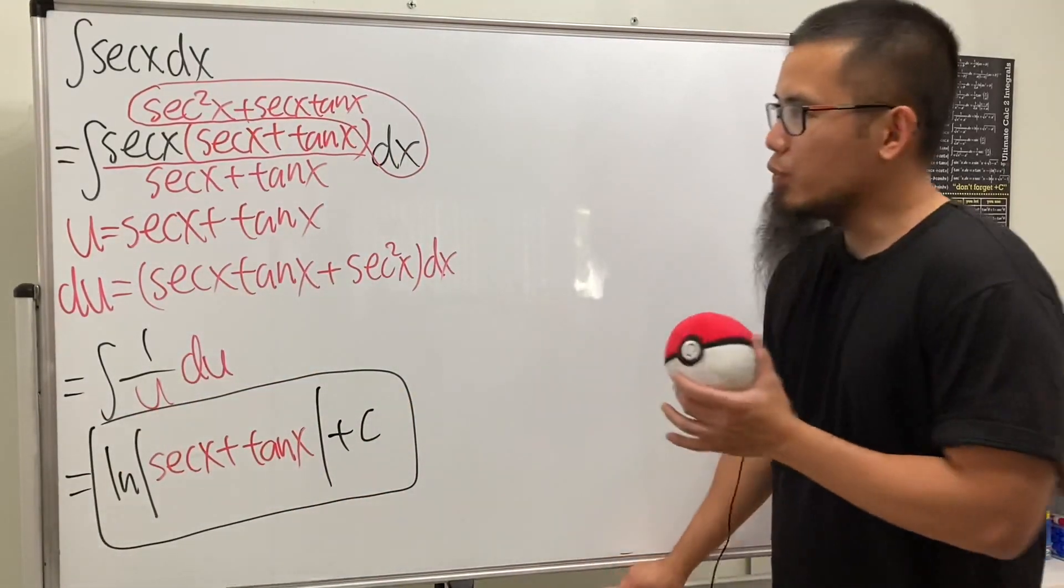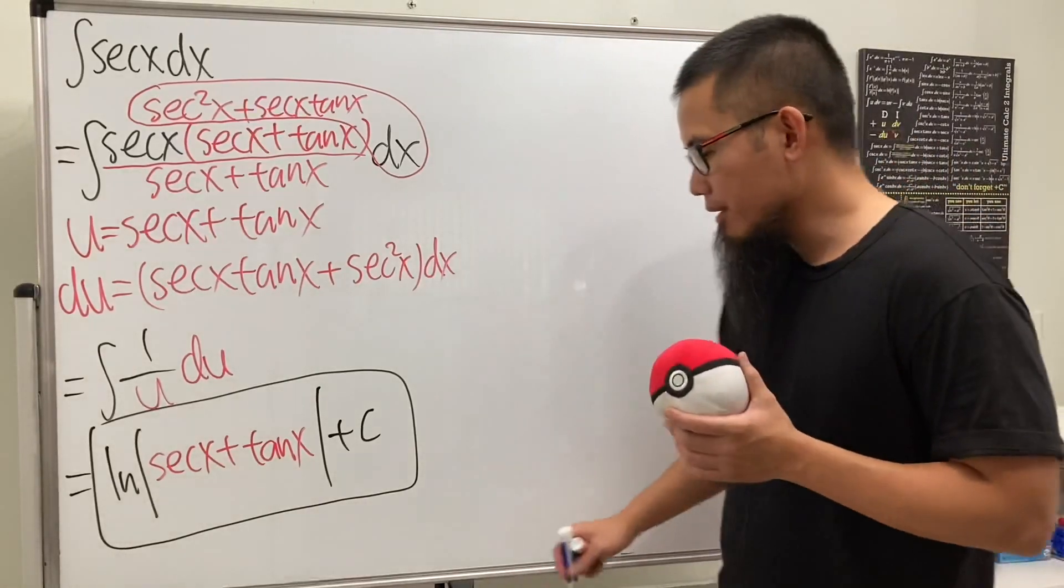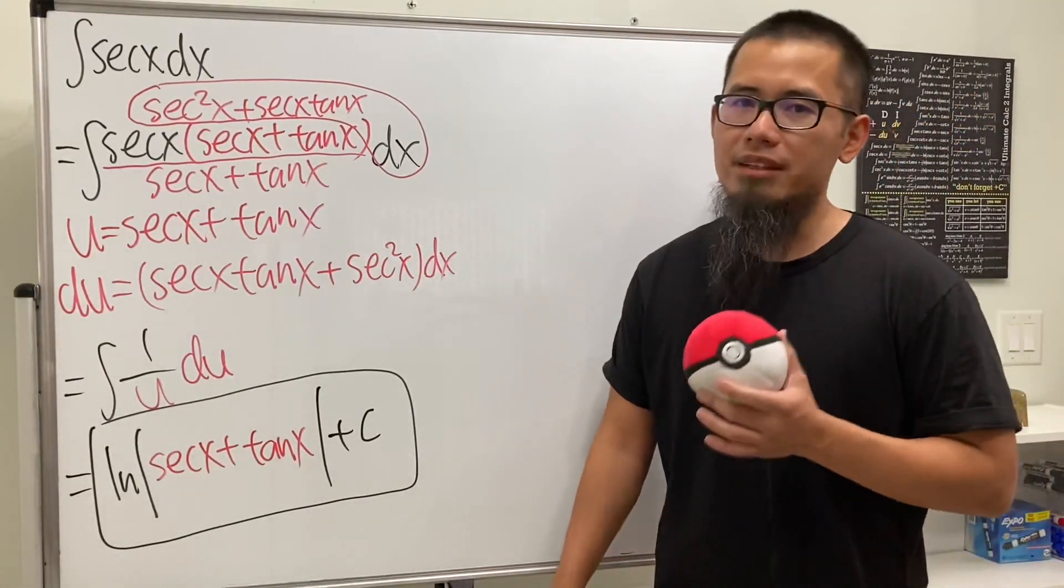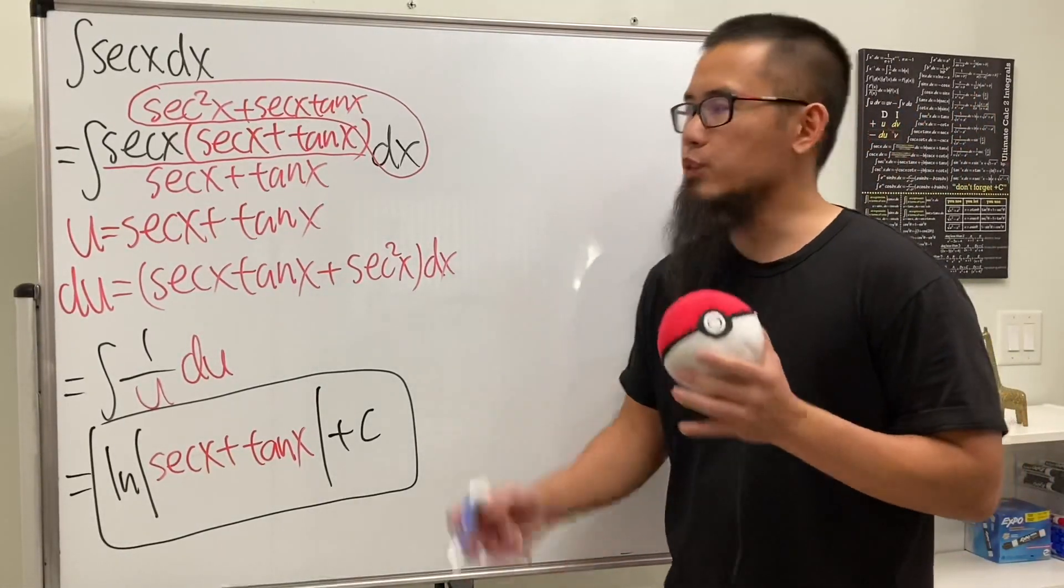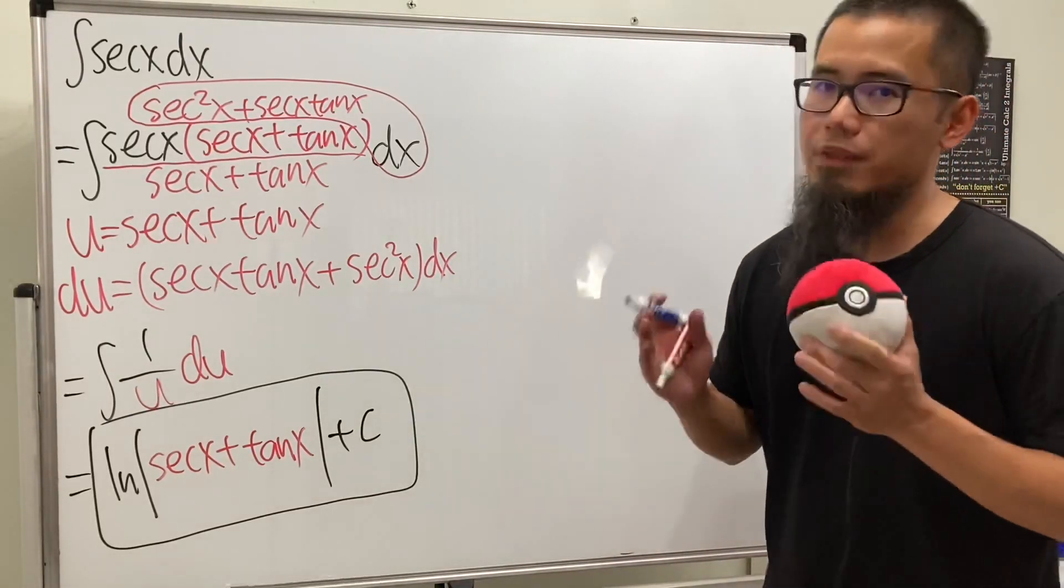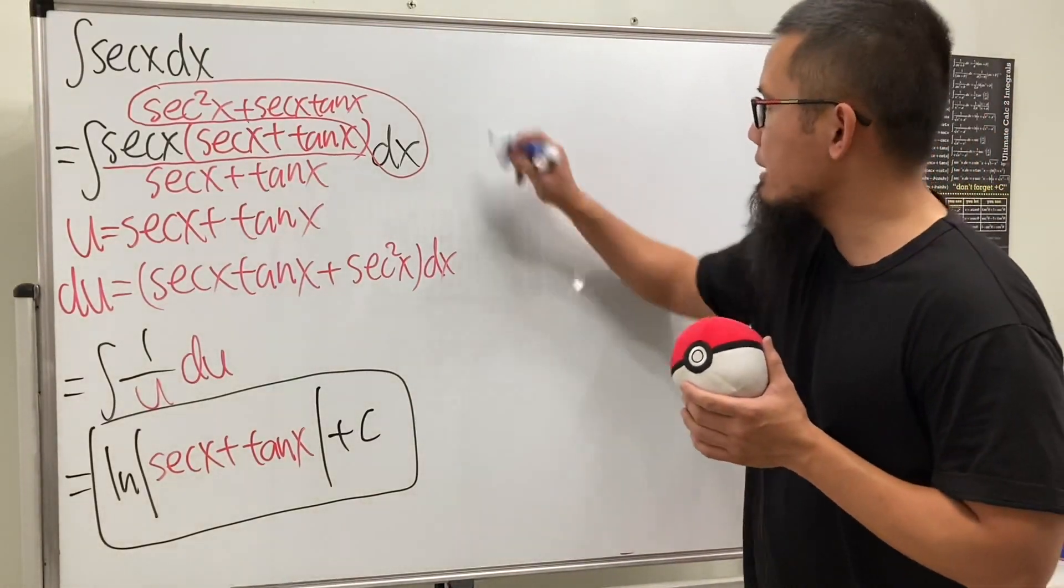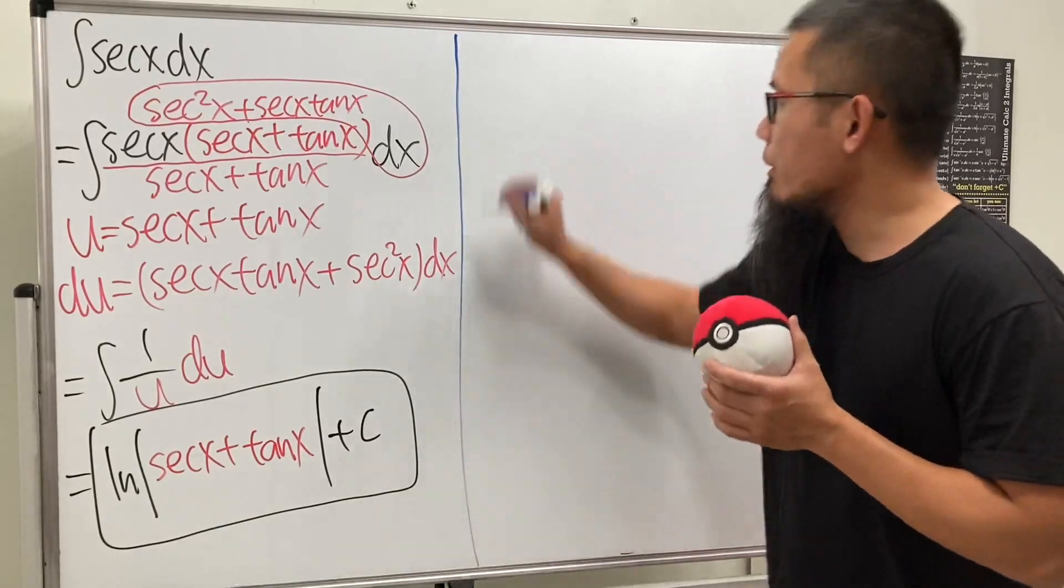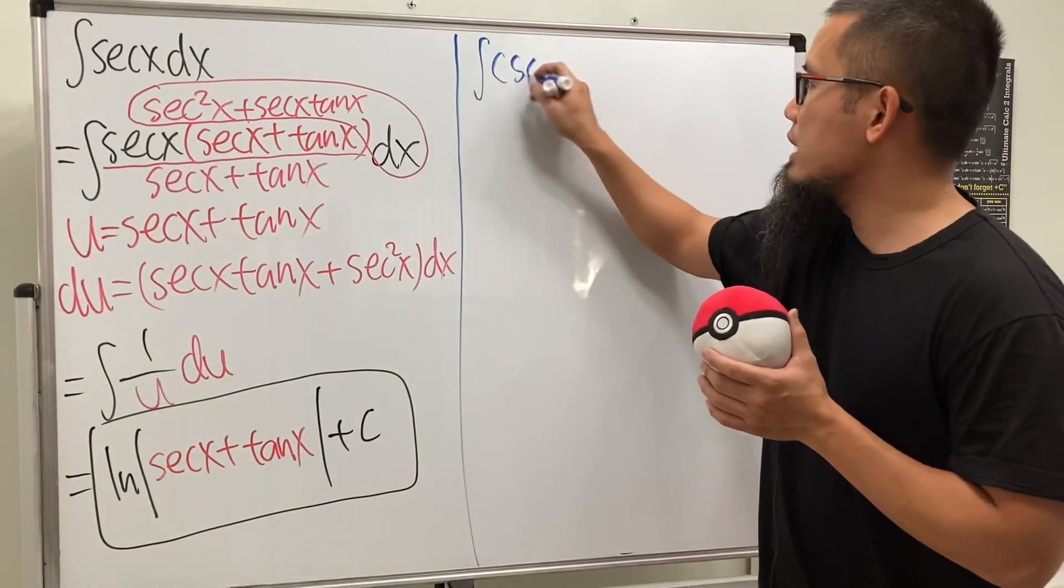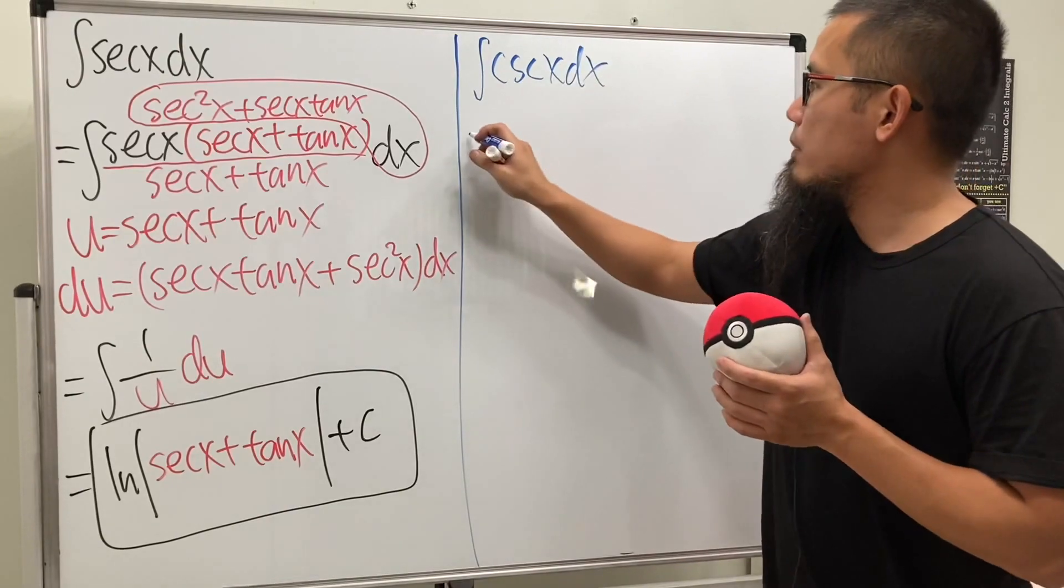So now, after we have done the integral of secant x, of course we can use the similar idea to do the integral of cosecant x. So let me just put that down right here for you guys. Well, integral of cosecant x.